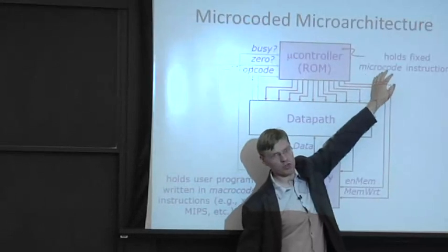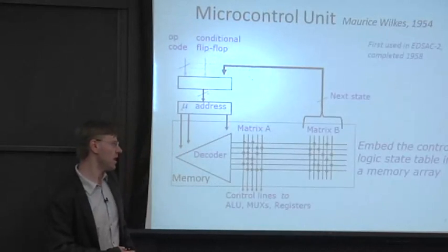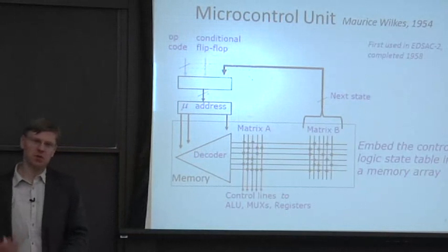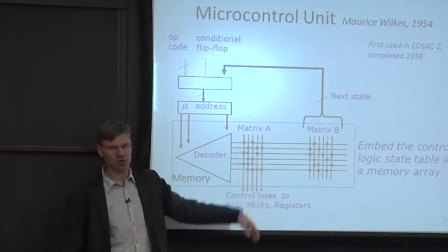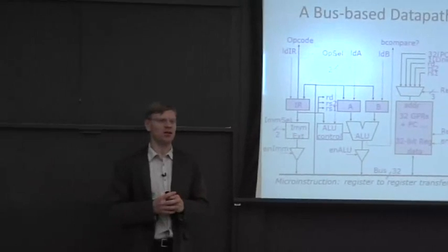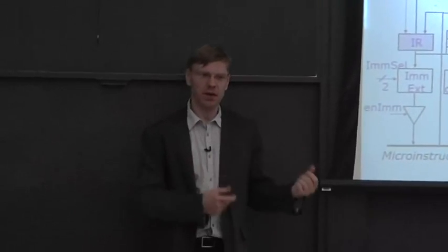Your ISA instructions — like x86 or MIPS — sit in RAM, while up here you have micro-code instructions. The ROM entries are called micro-code instructions, and people write little programs that describe how to control the different lines coming out. So let's put this all together and look at how we'd build a bus-based RISC processor — something like a MIPS processor from your computer organization class — where we reuse datapath elements over time. This is not a pipeline design; it's a micro-coded RISC design.